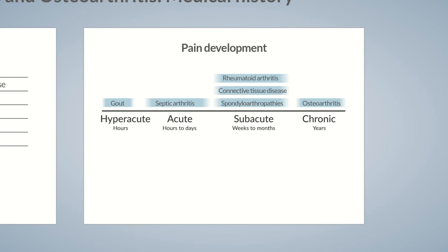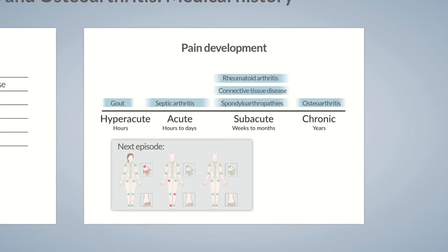A very decisive aspect is, of course, the joint affected. In part 3 of our Chalk Talk series on arthritis and osteoarthritis, we'll provide an overview of the affected joints. We'll also explain some terms, such as spondyloarthropathy, in further detail.